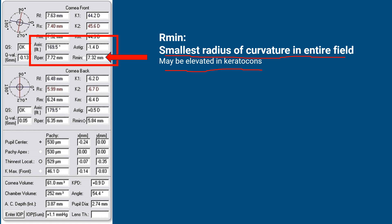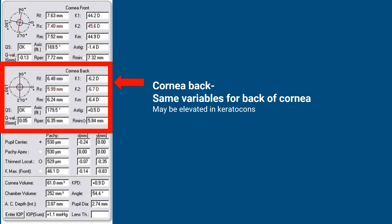Let's go to the next set of parameters — these are the same parameters now from the back of the cornea: K1, K2, Km astigmatism, axis of the flat meridian, R minimum, and RPR. Remember, if the astigmatism here is 6 diopters or more, it is again suspicious. The 6-diopter astigmatism on the anterior or posterior surface is suspicious for keratoconus.